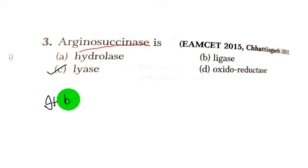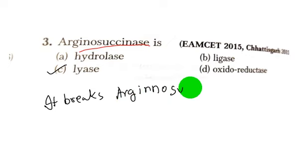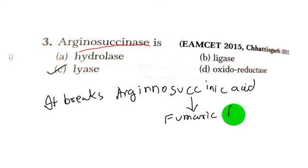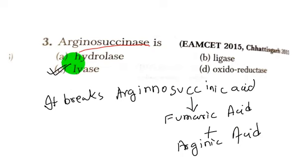It breaks the aginosuchinic acid — that is Arginosuchinase breaks the aginosuchinic acid into fumaric acid and arginic acid. Thus the answer is option number C, a lyase. Let's see another question.